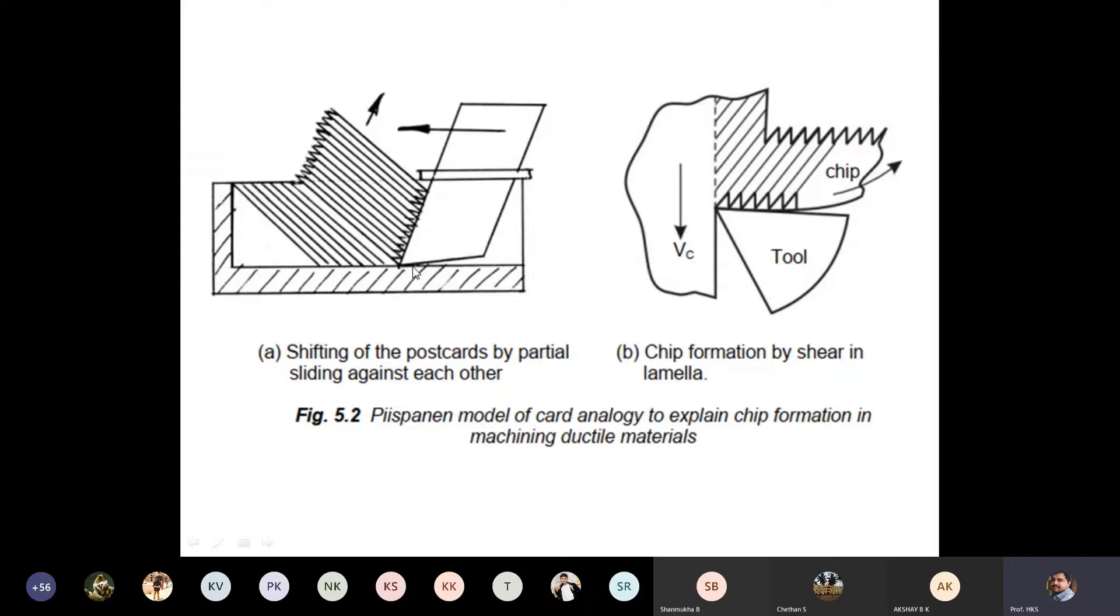This model proposes how material will be removed in the form of chips and which pattern it will follow. This is called the Piispanen model of card analogy. In this model, you consider a cardboard and postcards.